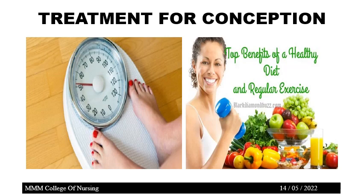Avoid sugar and starchy foods like potatoes, bread, rice, pasta, and beans. Regular exercise helps regulate blood sugar levels and keeps weight under control. Any diet that helps you lose weight can help your condition. Weight loss can improve cholesterol levels, lower insulin, and reduce heart disease and diabetes risk. Twenty minutes of moderate-intensity exercise at least 5 days a week can help women lose weight and improve ovulation and insulin levels.